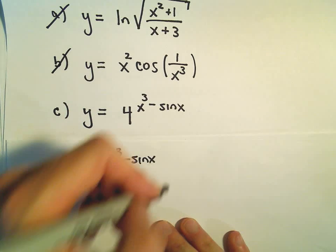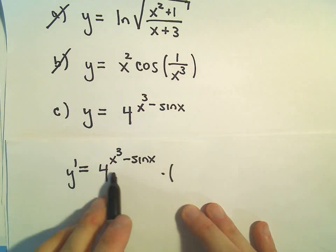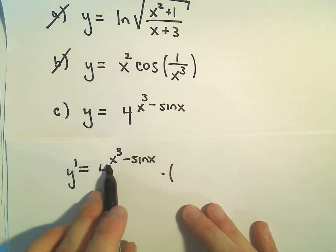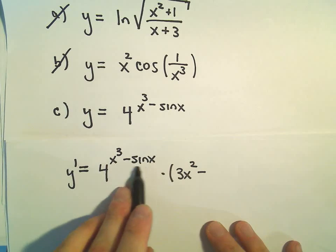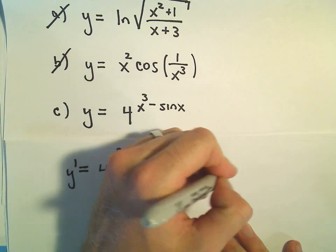So just like it was. Then we have to use the chain rule. We have to multiply by the derivative of the exponent. Well, the derivative of x³ is just 3x². The derivative of sin x is just cos x.